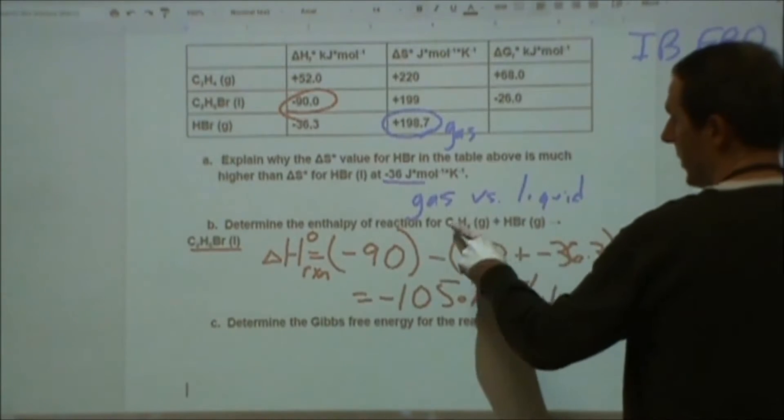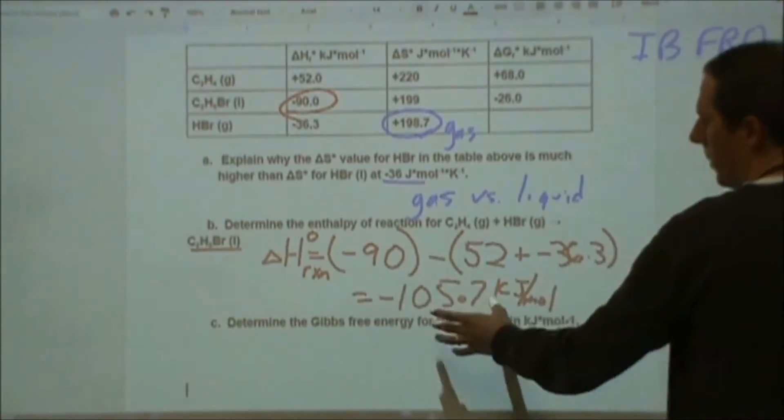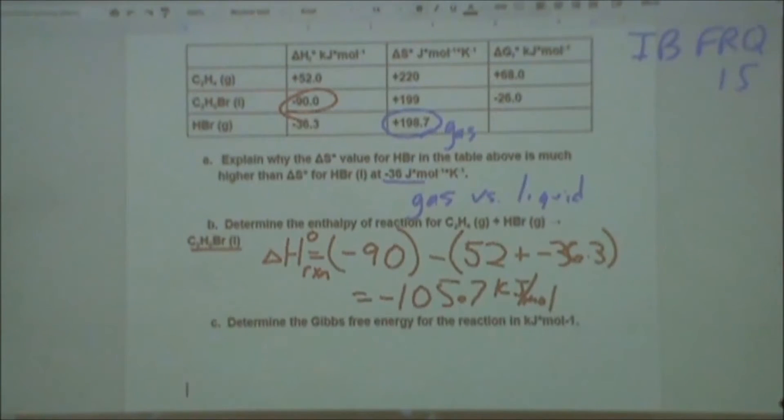So when this reaction happens, if one mole of this reacts with one mole of this to make one mole of that, then we would produce 105.7 kilojoules. It's an exothermic process, the surroundings would gain energy.